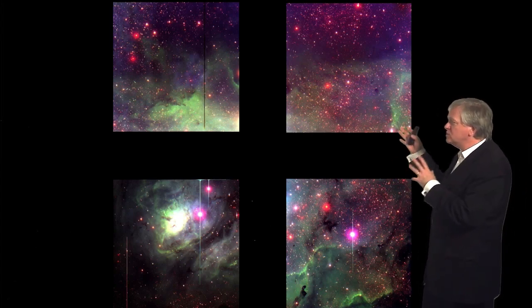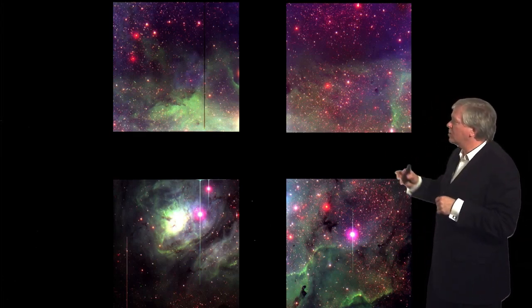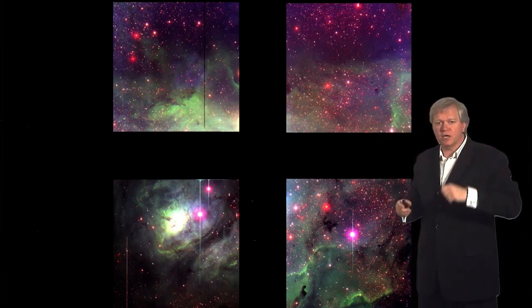These new detectors, two megapixel detectors, so that doesn't sound that big now, but it was big back then, were coming online. And so we could take pictures with large telescopes to very, very faint levels of a big enough region of the sky to hopefully find one of these objects.